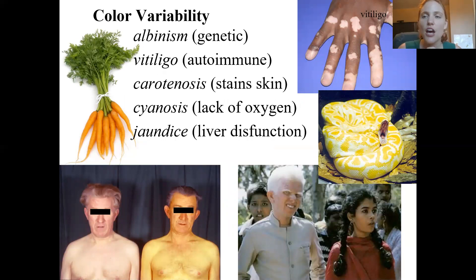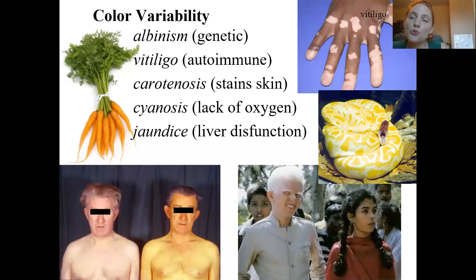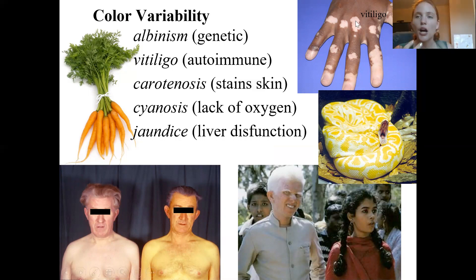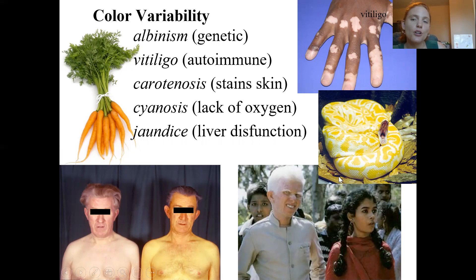There are also disorders that cause variations in skin color. Vitiligo is an autoimmune disorder where the immune system attacks the melanocytes. When melanocytes are destroyed, you can't produce melanin, resulting in patchy areas — some with normal melanin production and some with little or no melanin. Albinism is a genetic variation that can lead to producing no melanin at all.